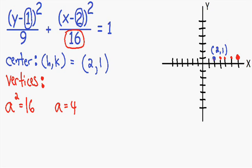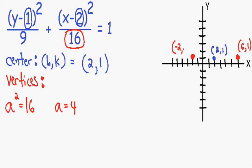We also have another vertex that is 4 units to the left: 1, 2, 3, 4. Now we can find the actual coordinates of these vertices. The vertex on the right goes 6 units to the right and up 1 unit, so that's the point (6, 1). The vertex on the left goes 2 units to the left and up 1 unit, so that's the point (−2, 1).